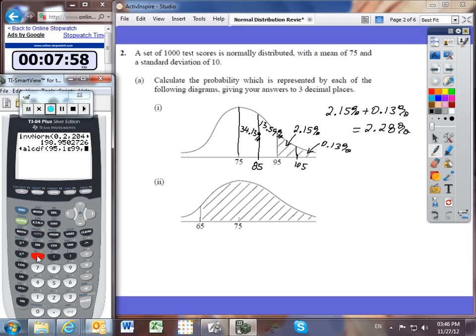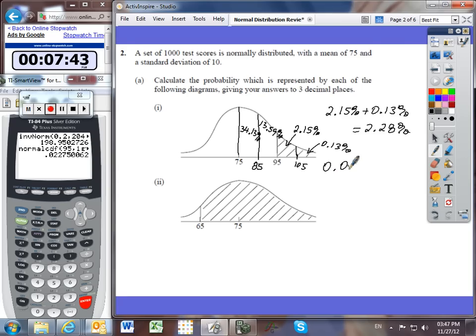And then we have to put in our mean of 75 and our standard deviation of 10. And let's see what it gives us. That's a probability of 0.0228, if I round it off. 0.02275 which rounds to...